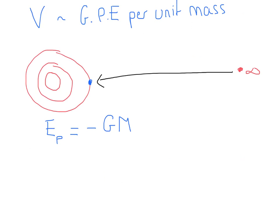Gravitational potential energy is the energy it takes to move a mass from infinity to that point. To calculate it, we have G times the mass of the planet times the mass of the test object, with R on the bottom rather than R squared. The minus sign comes from the fact that gravity is always attractive — the object wants to move from infinity into the gravitational field, so you're not doing work to move it; you can actually get work out of it. That's where the minus sign comes from, indicating that work is going out of the system. If you had to do work to move the object in, like with like charges in electric fields, you'd get a positive.